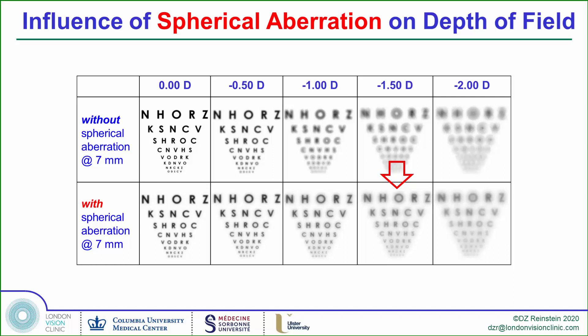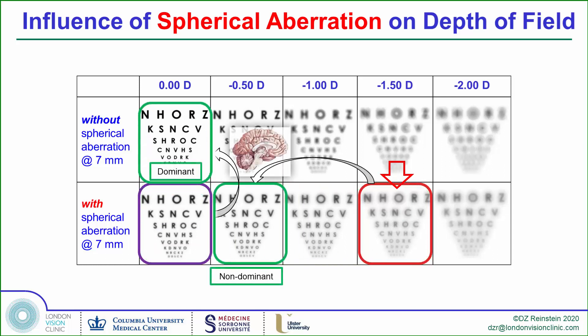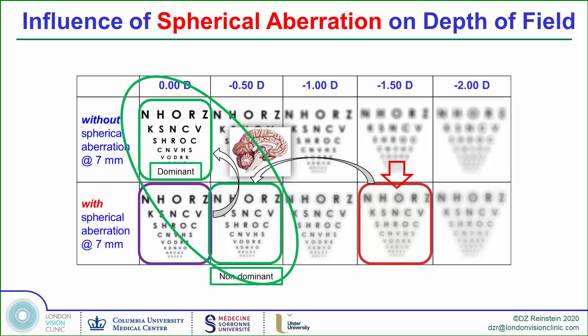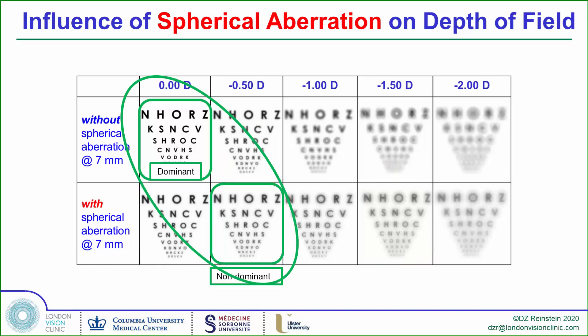The brain does not have to combine the dominant and non-dominant eyes with two very different images, because neural processing means that the images requiring combination are actually more similar — certainly far from the disparity seen with straight monovision.